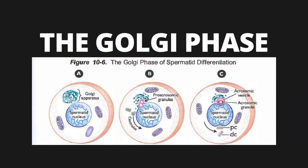This figure shows the Golgi phase of spermatid differentiation. In letter A, the newly formed spermatid is almost perfectly spherical and has a well-developed Golgi apparatus. In letter B, small vesicles of the Golgi fuse, giving rise to larger secretory granules called pro-acrosomic granules, and the centrioles start to migrate to a position beneath the nucleus opposite the acrosomic vesicle. In letter C, vesicle fusion continues until a large acrosomic vesicle is formed containing a dense acrosomic granule. The proximal centriole gives rise to the attachment point of the tail, while the distal centriole gives rise to the developing axoneme — the central portion of the tail — inside the cytoplasm of the spermatid.